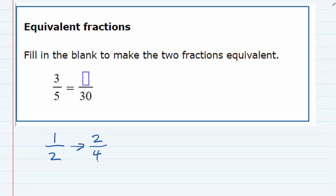But to do this I actually doubled the top and the bottom. I could have also tripled the top and the bottom. So if I tripled the one on the top that would be 3, 1 times 3. And the same thing on the bottom, 2 times 3 would give me 6. So 3 sixths is equivalent to both 1 half and 2 fourths.